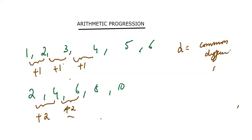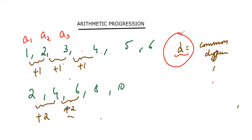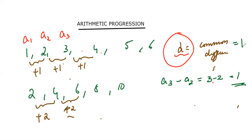If I take this as my first term, this is obviously my first term. My last term is six. In the second series, the first term is two and the last term is 10. So the first term I'm taking as a₁, the second term as a₂, the third term as a₃. And the difference is called common difference. How to get the common difference? If I subtract a₂ minus a₁, or a₃ minus a₂, I'll get my common difference. So if I do a₃ minus a₂ in the first case, I get three minus two, which is equal to one. So this is my common difference. D is my common difference.